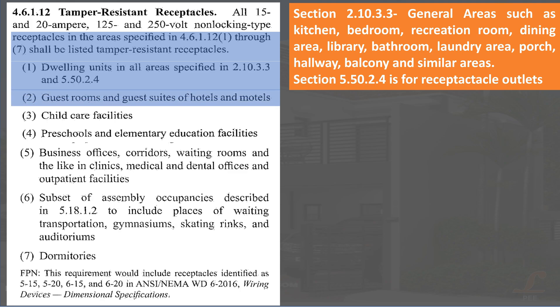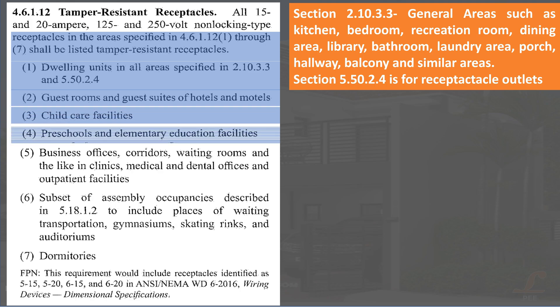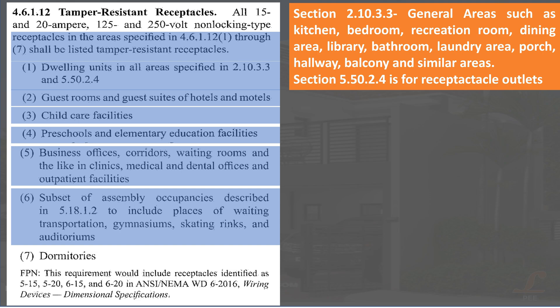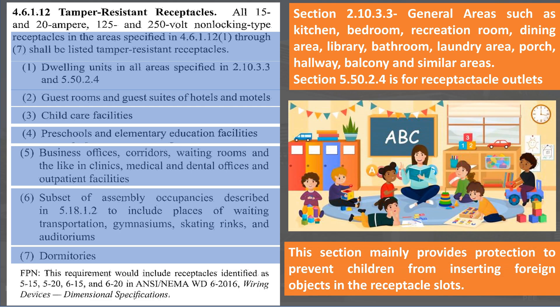Additional locations requiring tamper resistant receptacles: 2. guest rooms and guest suites of hotels and motels; 3. child care facilities; 4. preschools and elementary education facilities; 5. business offices, corridors, waiting rooms, and the like in clinics, medical and dental offices, and outpatient facilities; 6. assembly occupancies including places of waiting for transportation, gymnasiums, skating rinks, and auditoriums; 7. dormitories. This section mainly provides protection to prevent children from inserting foreign objects in the receptacle slots.